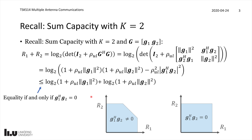We can illustrate this using the capacity region. When the two channel vectors are non-orthogonal, the off-diagonal term penalizes the region so that both users cannot achieve their maximum individual capacities simultaneously — part of the region is cut off. But when the channel vectors are orthogonal to each other, both users can achieve their maximum capacity at the same time, so the capacity region is square. It is therefore preferred to have channel vectors that are orthogonal to each other.